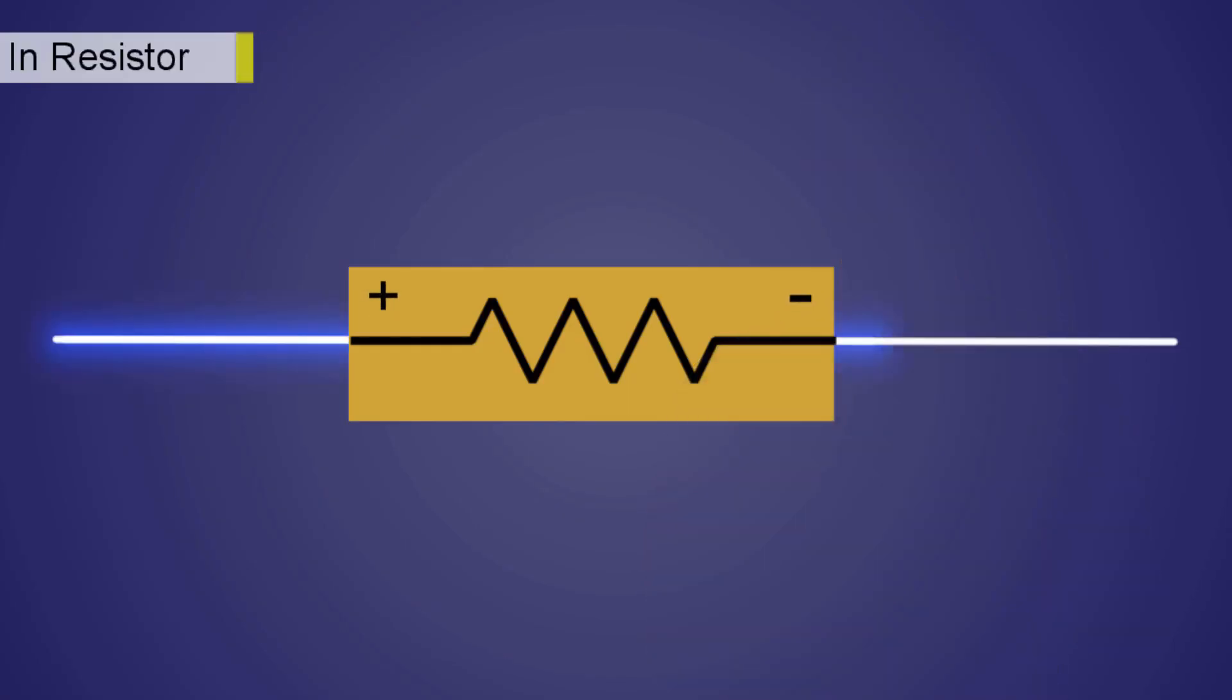In resistors the end from which the current enters is marked positive and the end from which the current leaves is marked negative. This is to denote that current always flows from higher potential to lower potential.